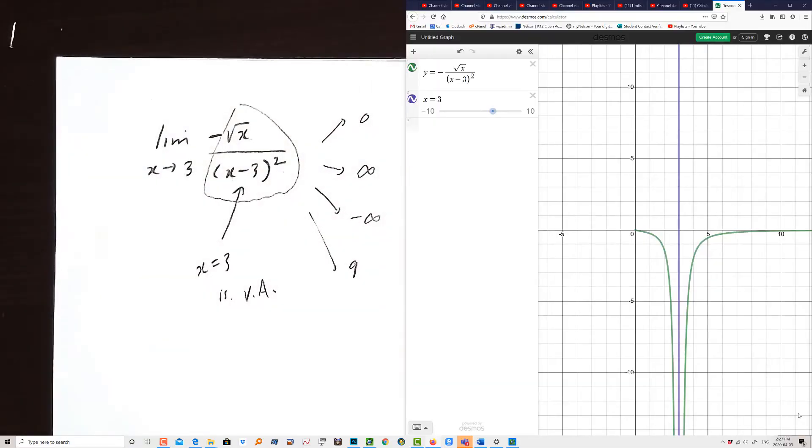Okay, so our good friend Desmos is here, and you can see we punched into Desmos y equals negative root x over x minus 3 all squared. And indeed, there's a vertical asymptote here. We typed in x equals 3, the purple line. And indeed, as x becomes very close to the purple line, we have negative infinity shooting down towards the bottom.